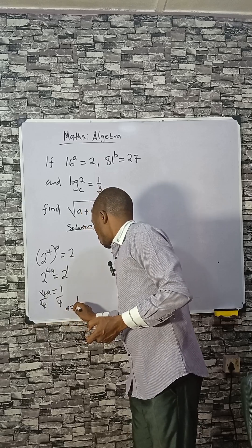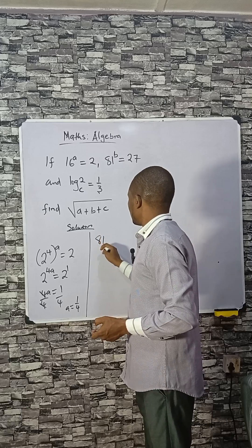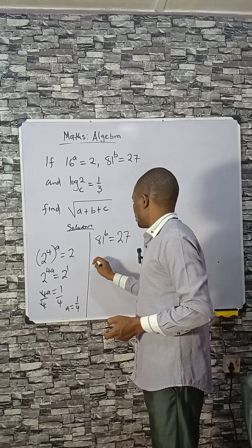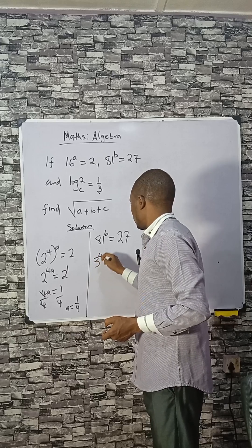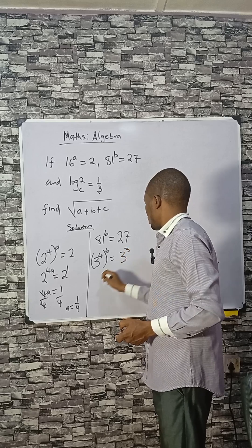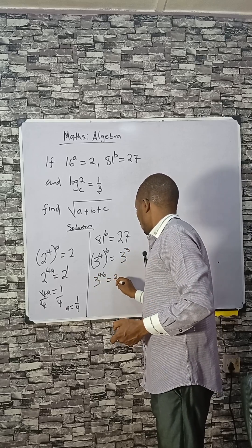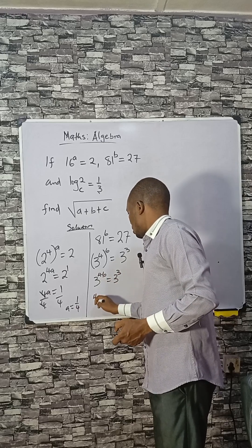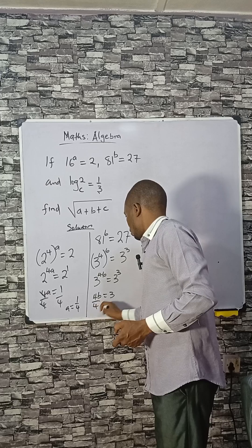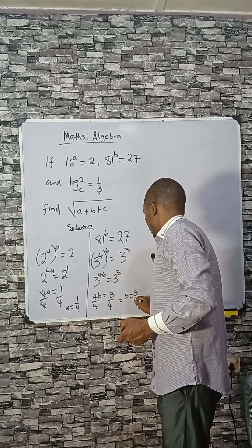That's for a. We consider b: 81 raised to power b equals 27. 81 is 3 raised to power 4, 27 is 3 raised to power 3, so 3 raised to power 4b equals 3 raised to power 3. We equate the powers since they have the same base. 4b equals 3, so divide by 4 to make b stand alone. b equals 3 over 4.